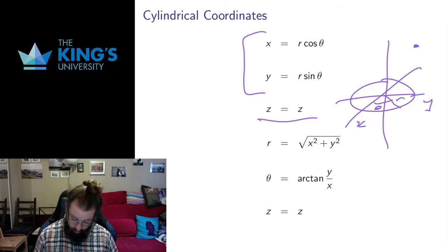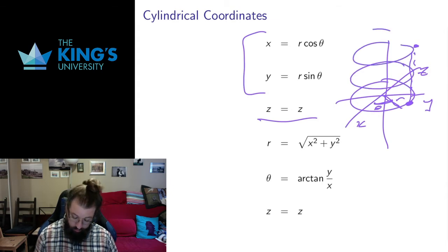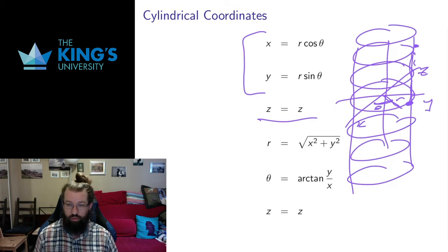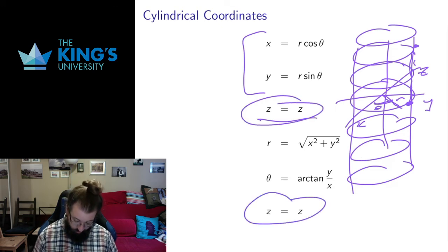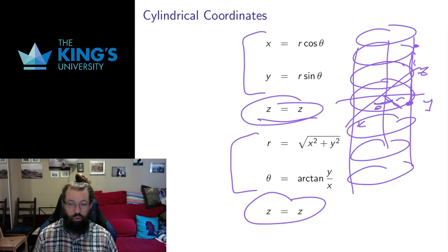So if I have a point up here, I look at where it came from in the xy plane. It has some radius, some angle, and then it has some height z above that point. You can see the cylindrical construction we get here, because we get concentric circles all the way up at different heights. Put all these concentric circles together and you get a cylindrical shape to this coordinate system. So z is the same as Cartesian z, and the x and y transformations are the same as they were for polar coordinates in R2.